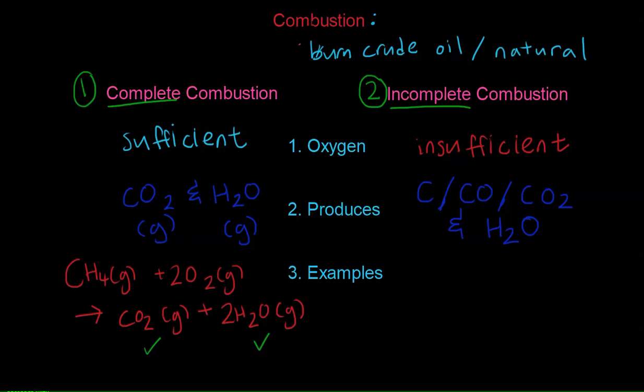Whereas for incomplete combustion, there's really no way to tell what is being produced. So there are a few examples, let me show you just two. First one is using methane, so it's 2 CH4 gaseous, plus 3 oxygen, giving you 2 carbon monoxide gaseous, plus 4 units of water. That's just one of the many examples, let me show you another one.